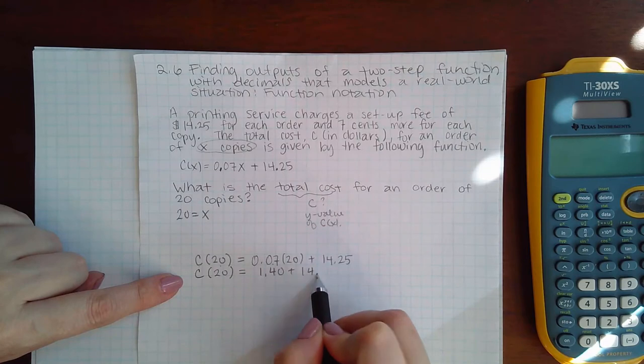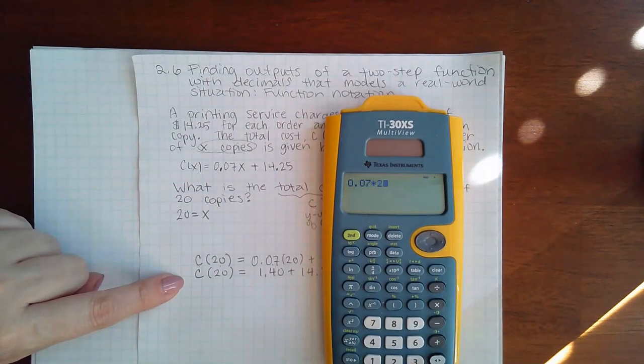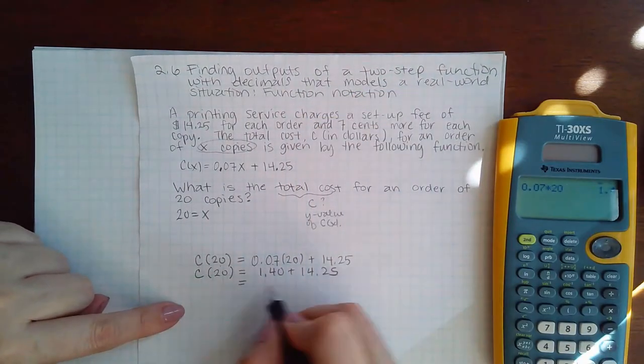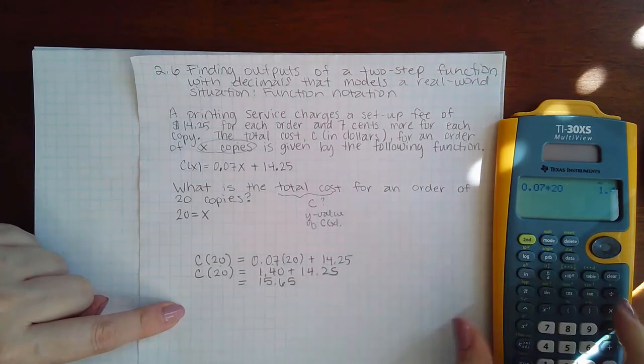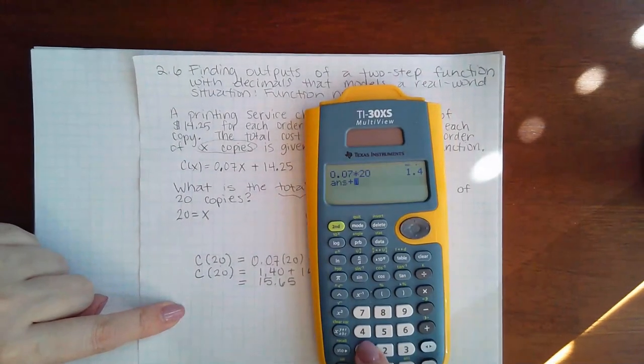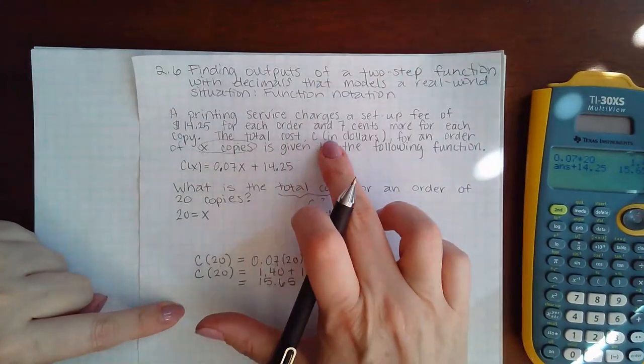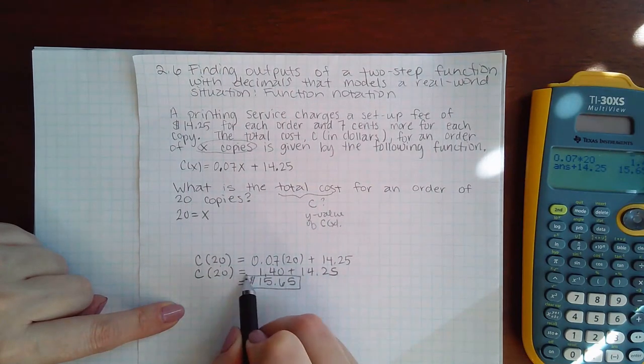I'm going to double check in my calculator. Yes, 1.4 plus 14.25 is going to give me 15.65. Use a calculator just to be sure. And it says that the cost is in dollars, so this would be $15.65.